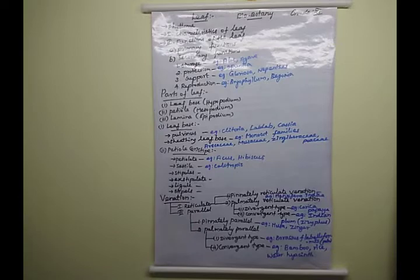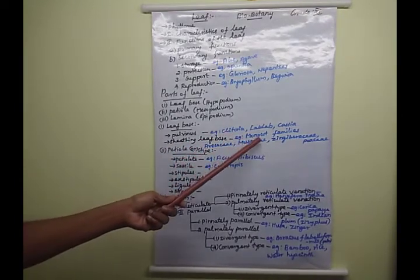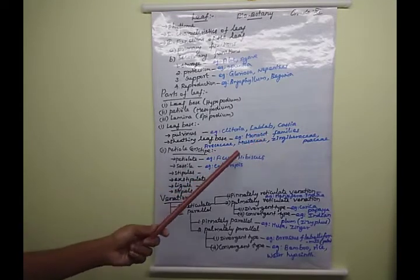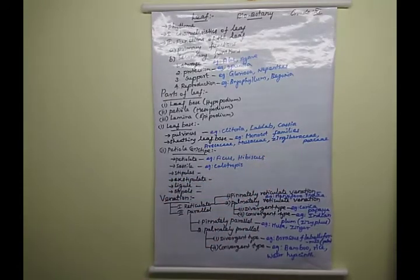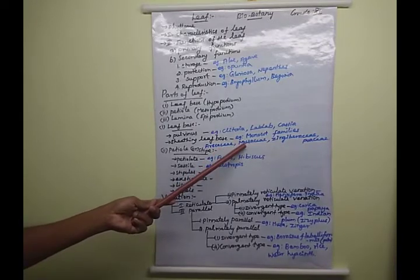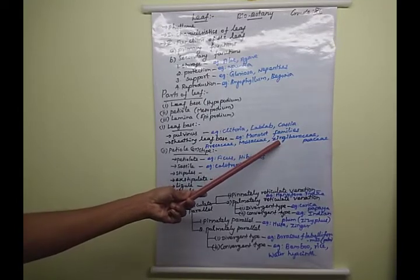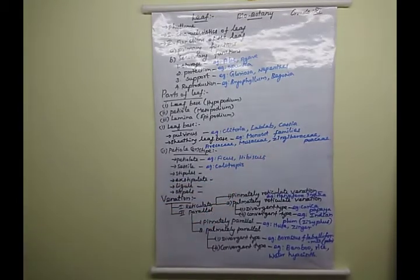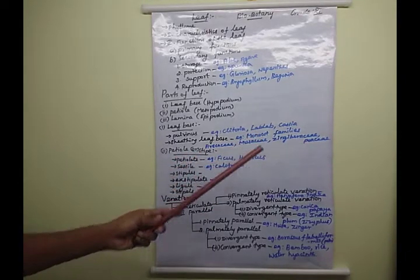Examples of families with sheathing leaf base: Arecaceae — palm tree structures; Musaceae — banana (Musa) species; Zingiberaceae — turmeric and ginger; Poaceae — rice. These are examples of monocotyledon families with sheathing leaf base.